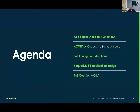Let's talk about the agenda today. It's going to be a bit of a sprawling conversation since this is the first one. We want to talk about what we're looking to accomplish in the Academy generally. We have an analogy story to clearly explain the most common App Engine use case, then we'll look at solutioning considerations, and discuss request-fulfill — one of the most common applications of App Engine. Finally, we'll have time for the poll question and Q&A.